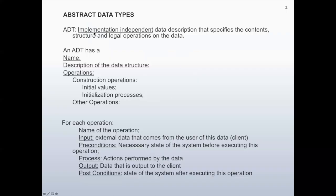Abstract data types are implementation-independent data descriptions that specify the contents, structure, and legal operations on the data. An abstract data type has a name, a description of the data structure, and operations — which include construction operations describing the initial values and initialization processes, and also other operations.